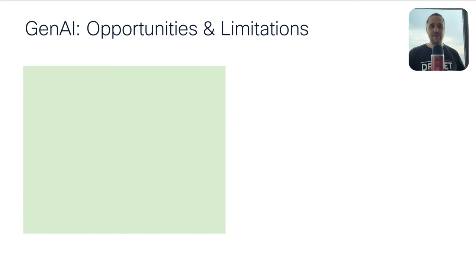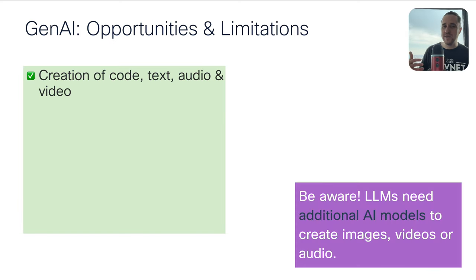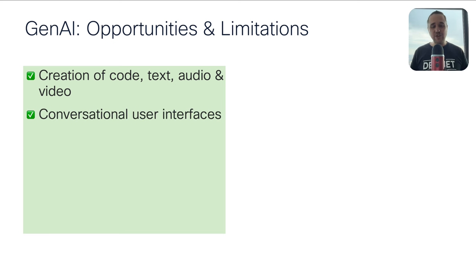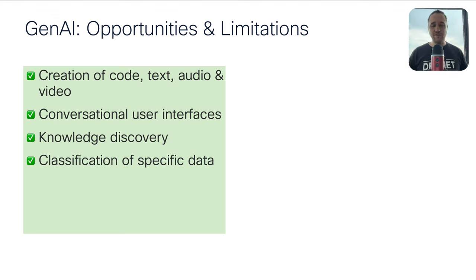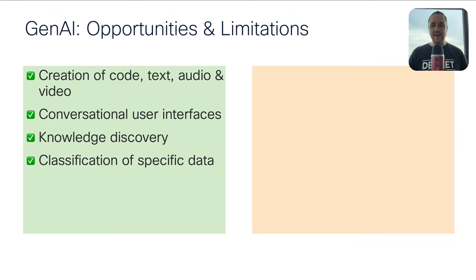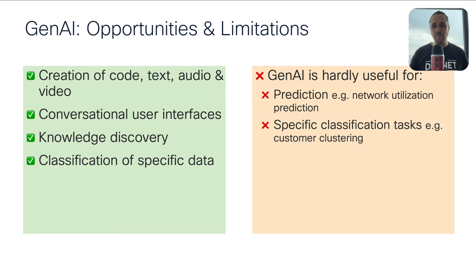What are the opportunities and limitations of generative AI? With generative AI, you can create code, text, audio, video, and images. You can build conversational user interfaces and chatbots. For knowledge discovery, you can summarize texts, create new content, format or convert data — like text to JSON, or natural language to programming code. You can also do classification such as sentiment analysis to determine if text has a positive or negative impact. However, generative AI is not well-suited for prediction tasks like network utilization prediction or customer clustering.